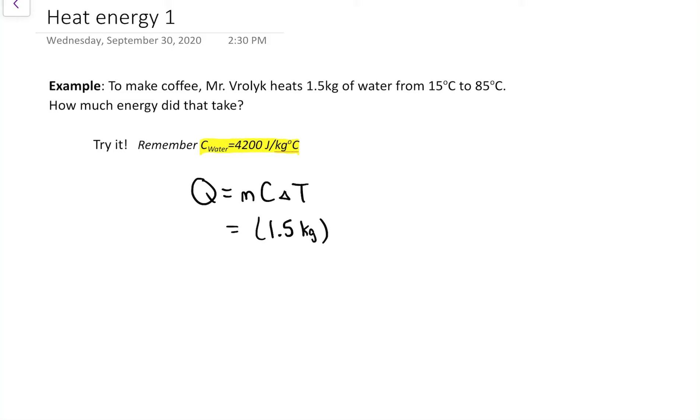C for water, there's different versions of it. I've seen 4186, 4190 - I usually round it off to 4200. So if you disagree on the value, that's okay, as long as we're kind of close.